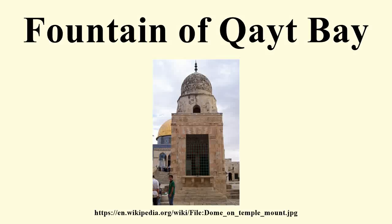The Fountain of Qayt Bay, or Sabil Qayt Bay, is a domed public fountain located on the western esplanade of the Temple Mount in Jerusalem's Old City. Situated 50 metres west of the Dome of the Rock and built in the 15th century by the Egyptians, it was completed in the reign of Qayt Bay, Sultan of Egypt, after whom it is named. It has been called the most beautiful edifice in the Temple Mount, after the Dome of the Rock.